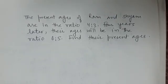The present ages of Ram and Sham are in the ratio 4 is to 3. Four years later their ages will be in the ratio 6 is to 5, and the question is find their present ages.